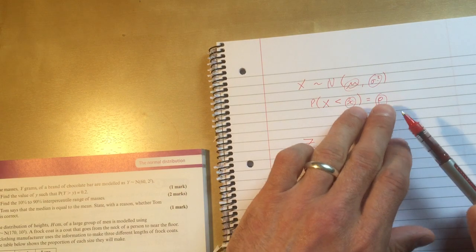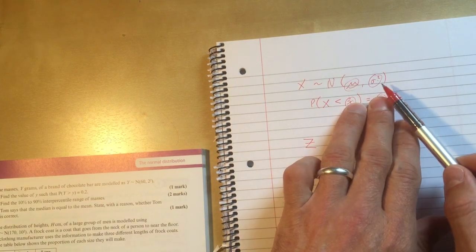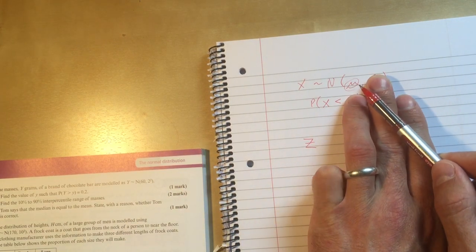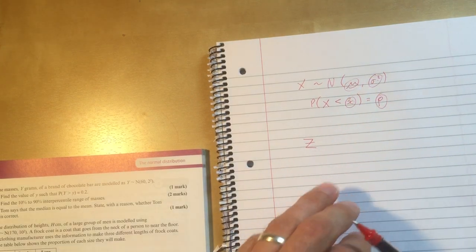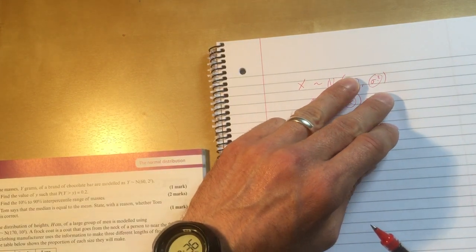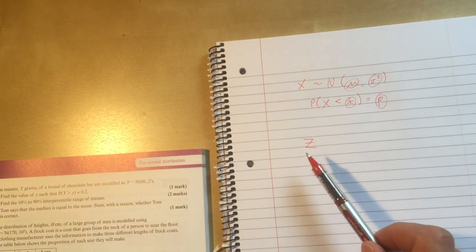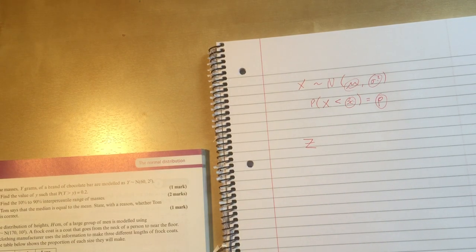If I give you x and p and sigma and ask you to find mu, the answer is, you need to use this z. If I give you x and p and mu and ask you to find sigma, the answer is, you need to use this z thing from section 3.4.